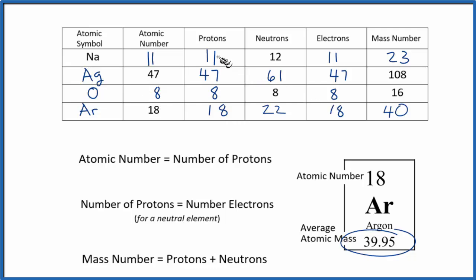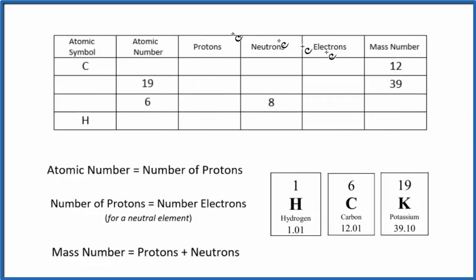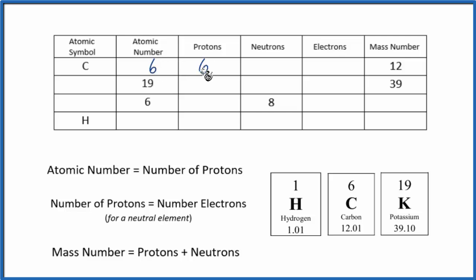We've completed the table with the protons, neutrons, electrons, and mass number for these elements. Now pause and complete the table for protons, neutrons, and electrons using these rules and the periodic table blocks to guide your work. For carbon, the atomic number is 6, so protons should be 6, and because it's neutral, we'll have 6 electrons. 6 plus 6 gives us the mass number of 12.